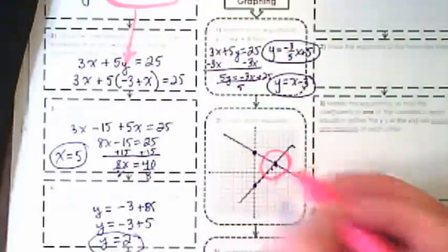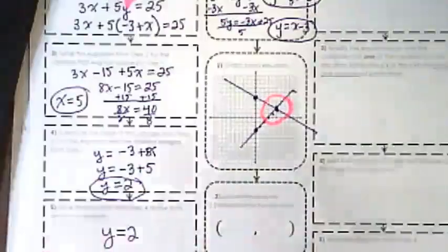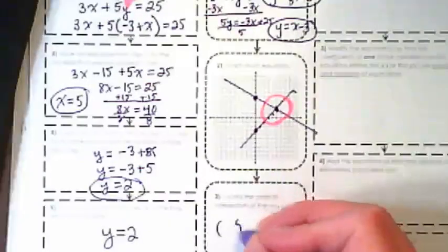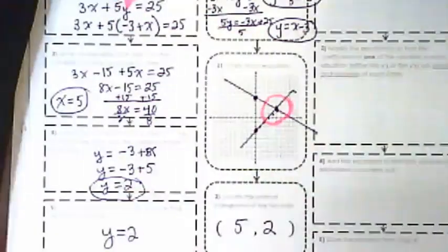You can see where they crossed right here. And that is 5 over and 2 up, so it is also showing 5 comma 2.